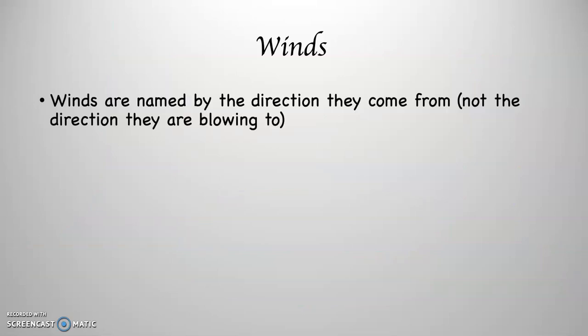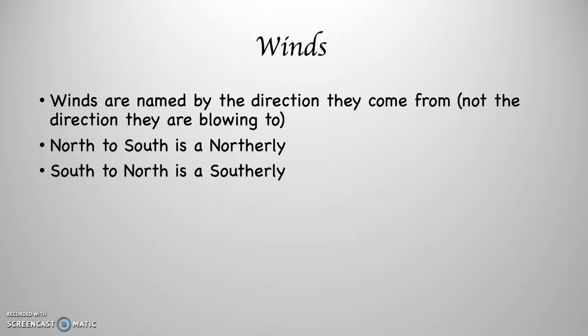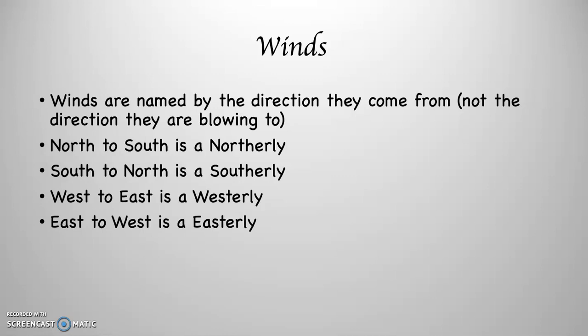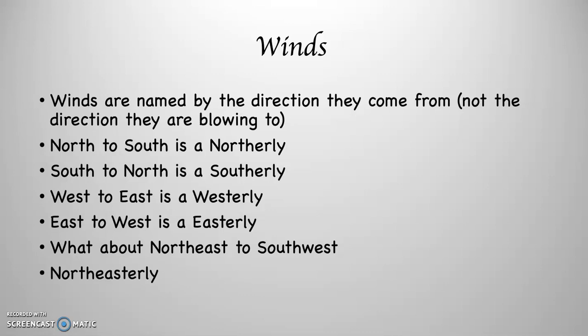Winds are named by the direction they come from, not the direction they go to. We know where they came from because that's a past event. Therefore, if the air is blowing from north to south, we call that wind a northerly. If the wind is blowing from south to north, that's a southerly. If from west to east, that's a westerly. And from east to west, that's an easterly. What about from northeast to southwest? That would be a northeasterly wind. There's going to be a very important northeasterly wind coming up in a future lesson.